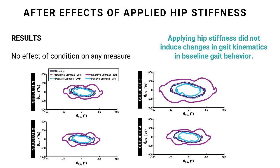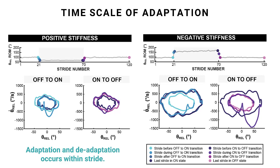This can be seen in the face portraits for each subject shown below. When positive stiffness is applied, shown in light blue, you see a smaller orbit for all subjects. When negative stiffness is applied, you see a larger orbit shown in purple. What you'll also notice is that three orbits are plotted on top of one another: baseline, negative stiffness off, and positive stiffness off, with the last two indicated by dashed lines. This shows that gait behavior, regardless of whether positive or negative stiffness was applied, ultimately returns back to baseline as soon as the applied stiffness is removed. If you look at the strides at the transition from turning the stiffness controller on or off, you see that either adaptation or de-adaptation occurs within one stride.